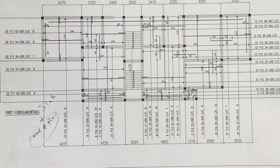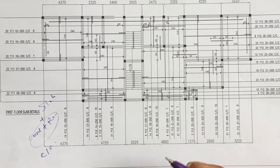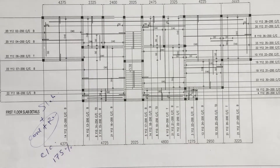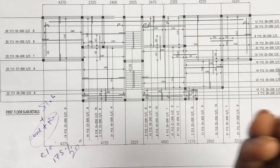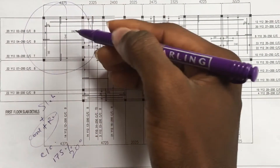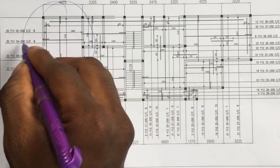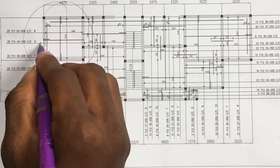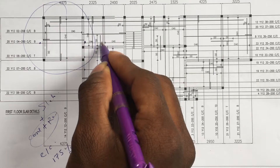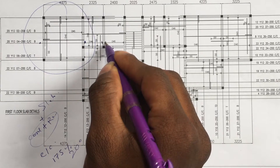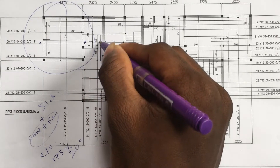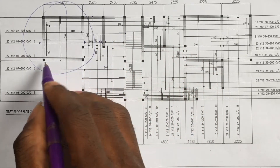The next thing is to know the center-to-center spacing you're giving your slab. In this case we're given 175 center-to-center, but here we're making use of 200. Let's use this portion to explain everything. This line here is a call-out line, and what it's saying is that from this side to this side we will have this reinforcement.